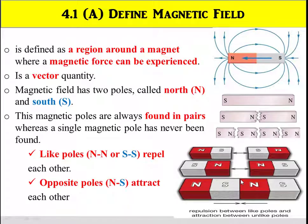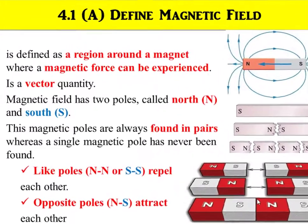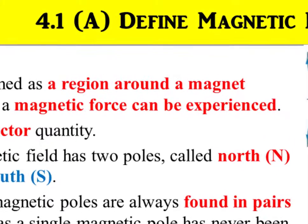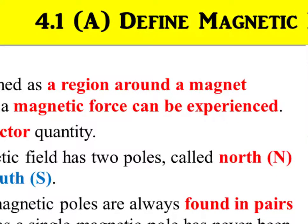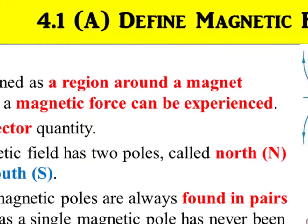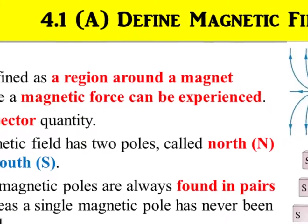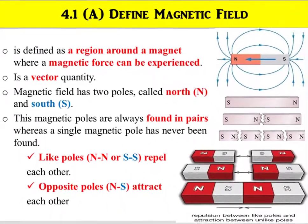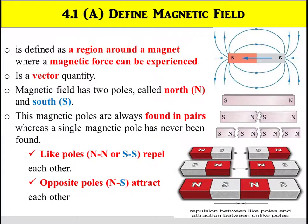What is magnetic field? Magnetic field is defined as a region around a magnet where a magnetic force can be experienced. It is a vector quantity. Magnetic field has two poles called North, symbol N, and South, symbol S. These magnetic poles are always found in pairs, whereas a single magnetic pole has never been found.